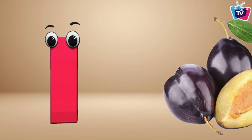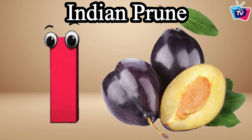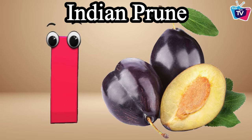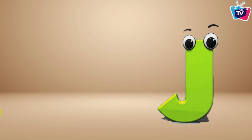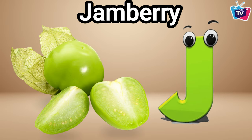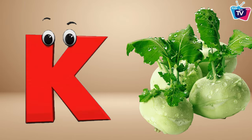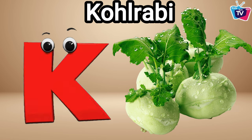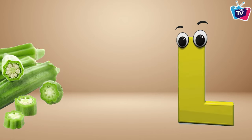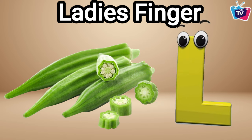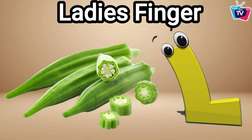I is for Indian prune, Indian prune. J is for jamberry, jamberry. K is for kohlrabi, kohlrabi. L is for lady's finger, lady's finger.